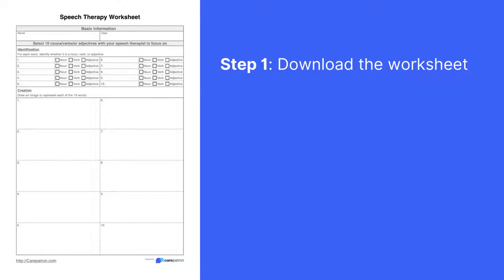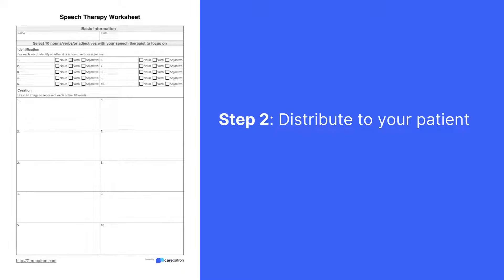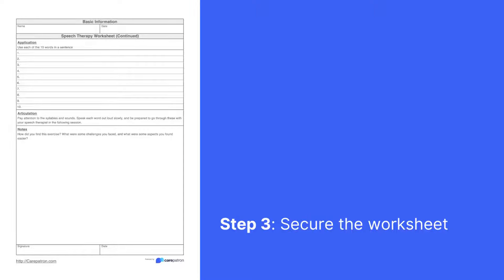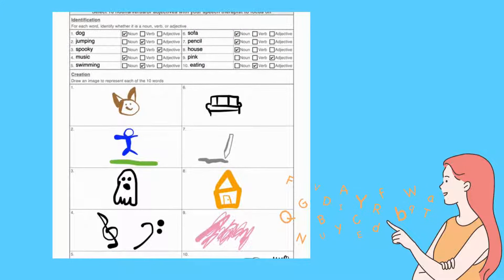The first step is to download the worksheet. You can forward this electronically to your client or you can print it out to handwrite. The next step is to distribute the worksheet to your patient. They should complete it within your session or as a homework exercise outside of your office. Once all sections of the worksheet are complete, including the second page, you then need to secure it safely. Ideally, this is within a platform that prioritizes HIPAA compliant regulations and standards to protect your patient information. Here is an example of a completed speech therapy worksheet.